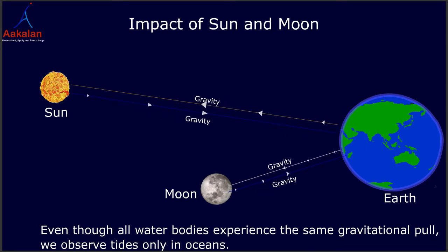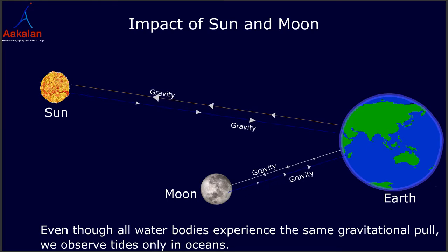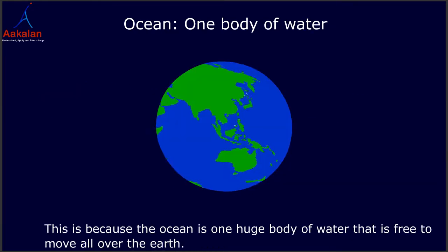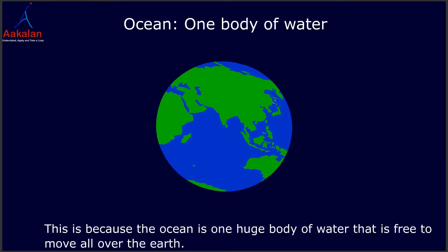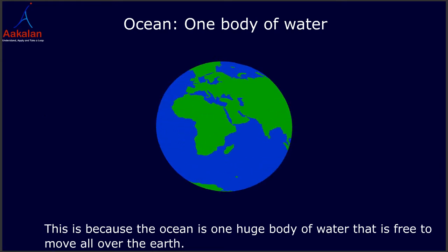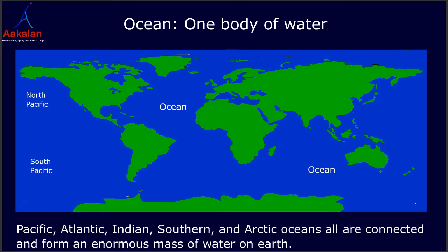Even though all water bodies experience the same gravitational pull, we observe tides only in oceans. This is because the ocean is one huge body of water that is free to move all over the earth. The Pacific, Atlantic, Indian, Southern, and Arctic oceans are all connected and form an enormous mass of water on earth.